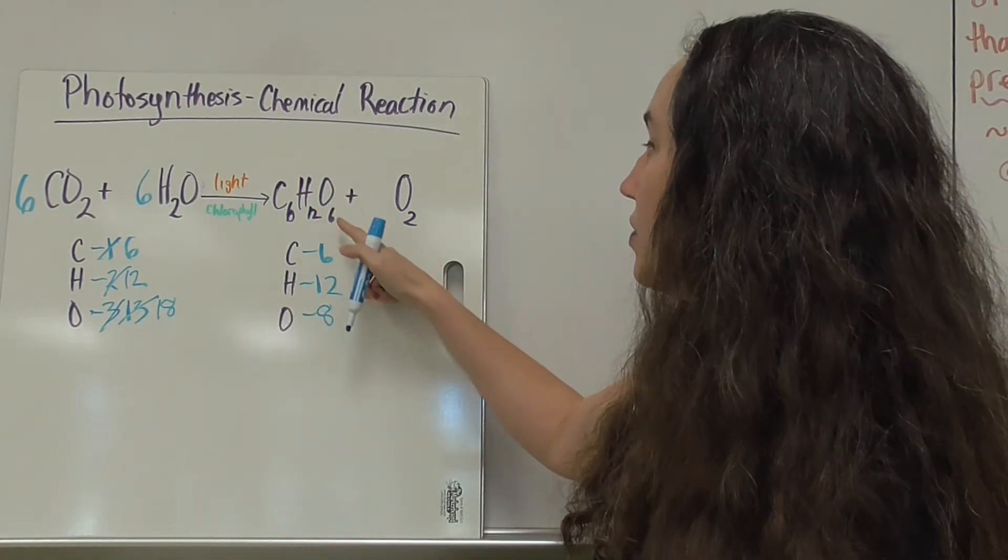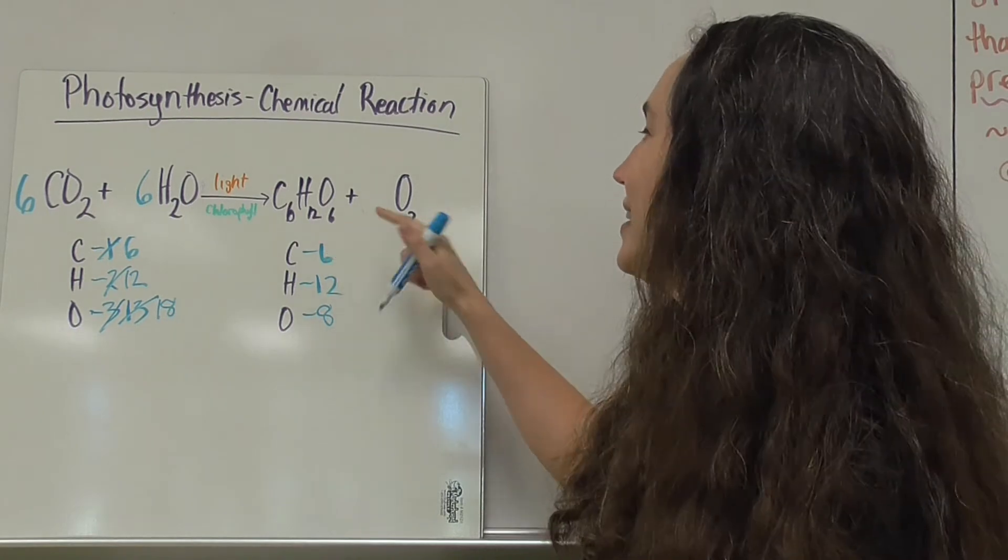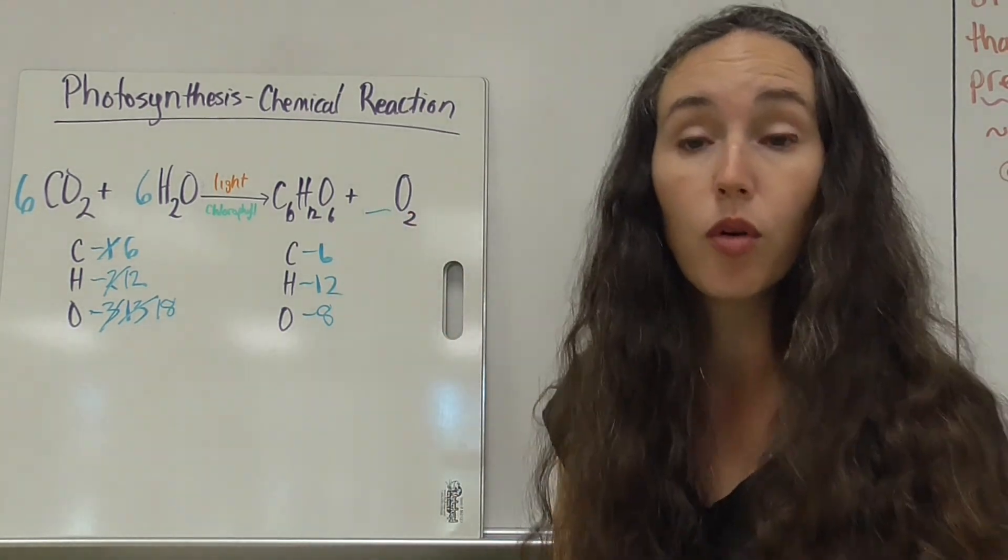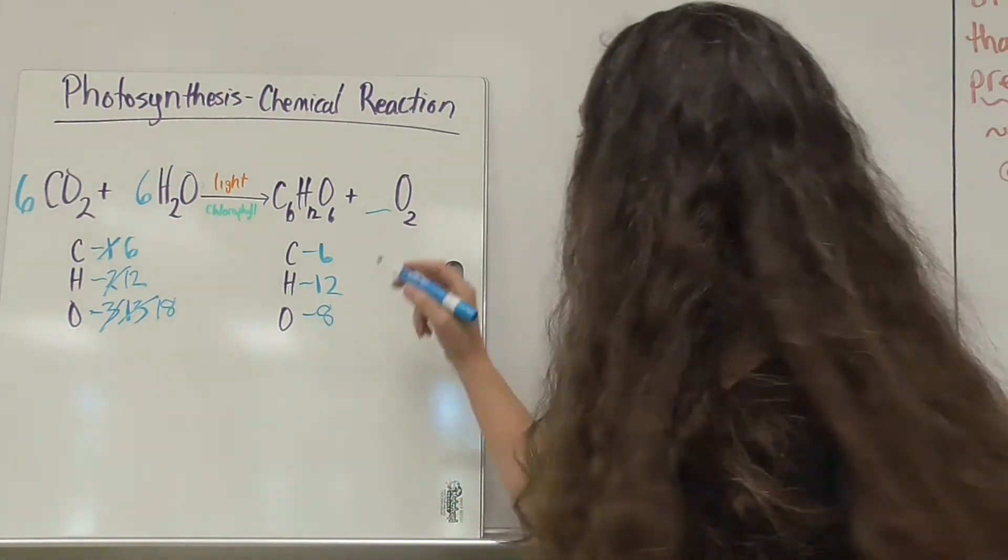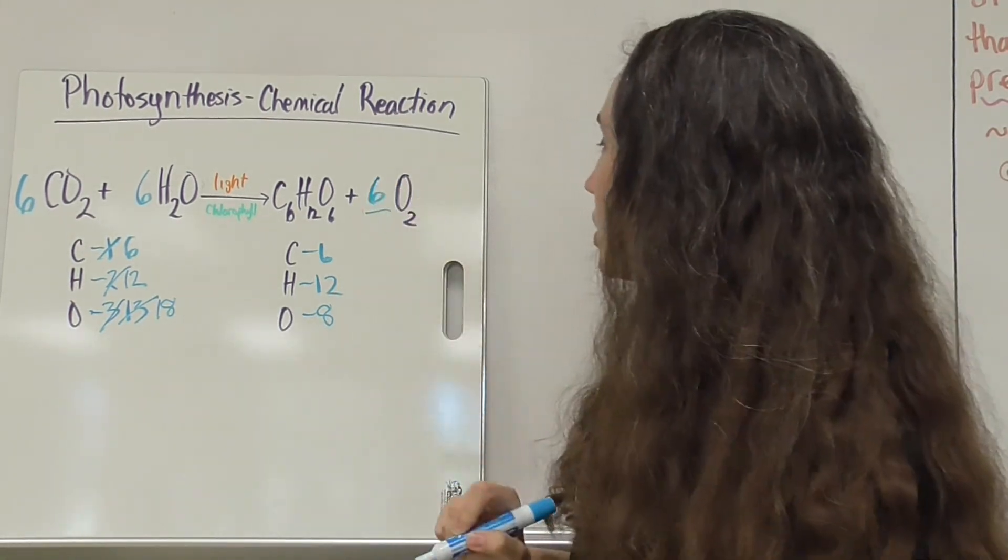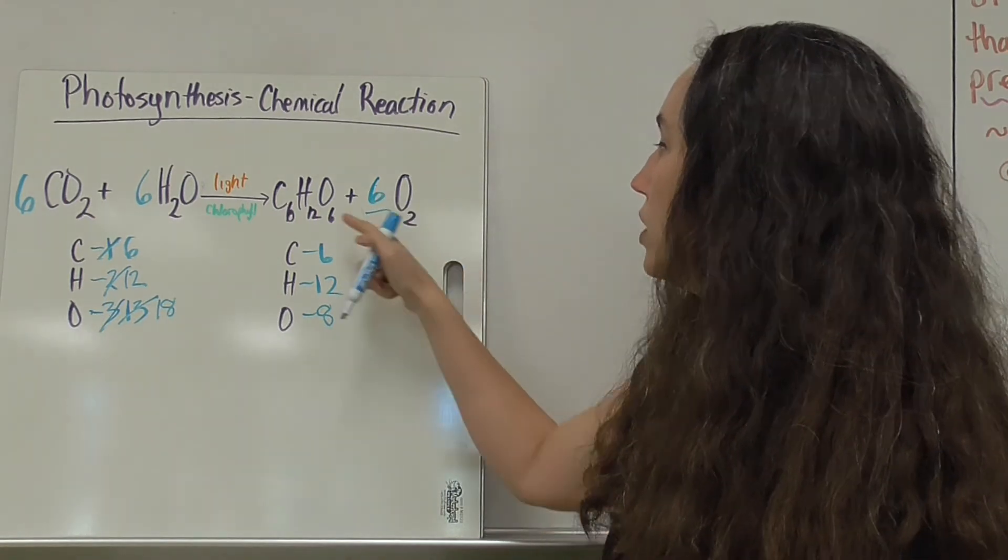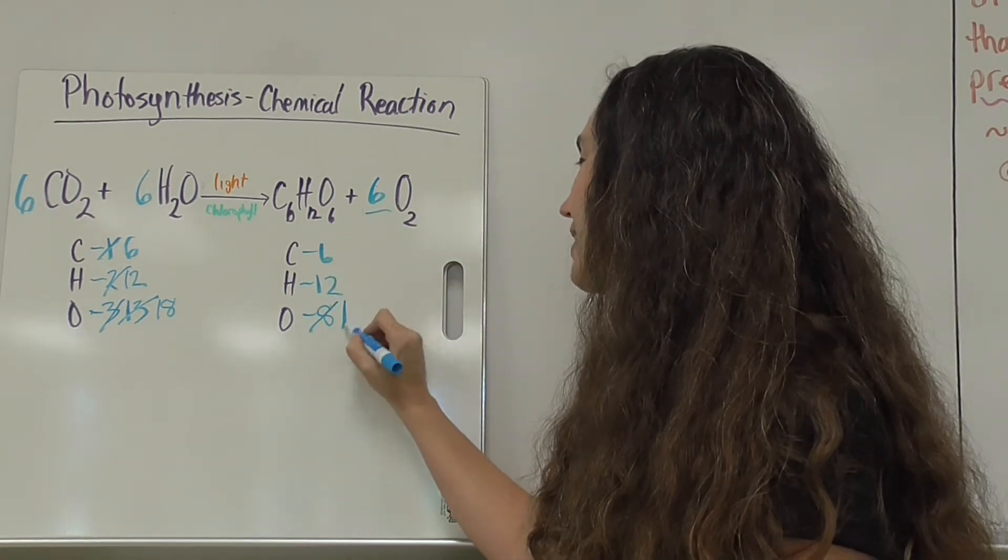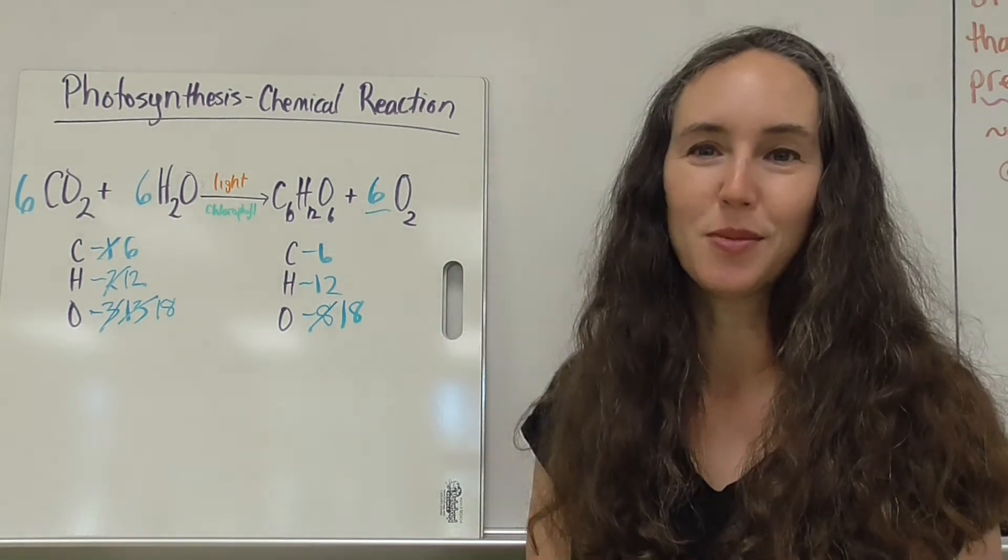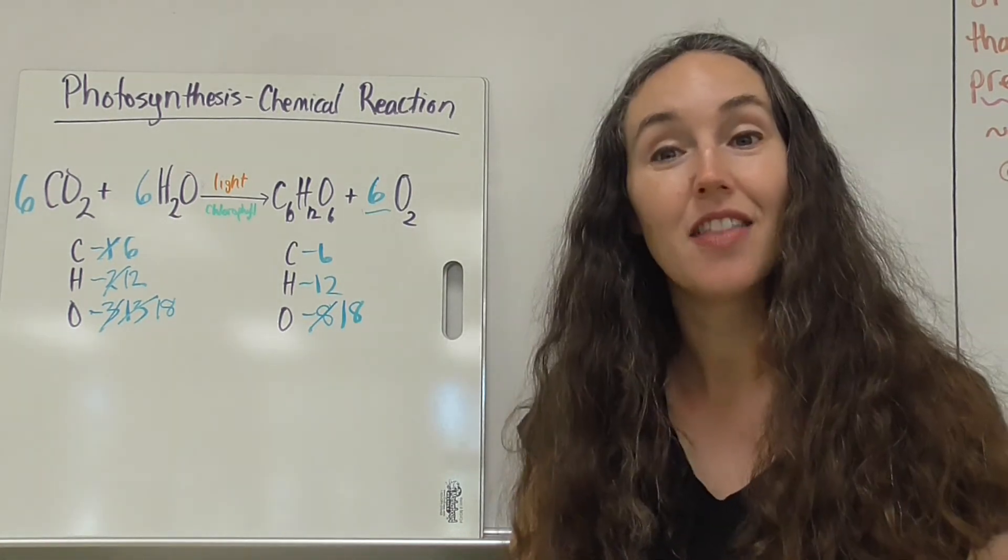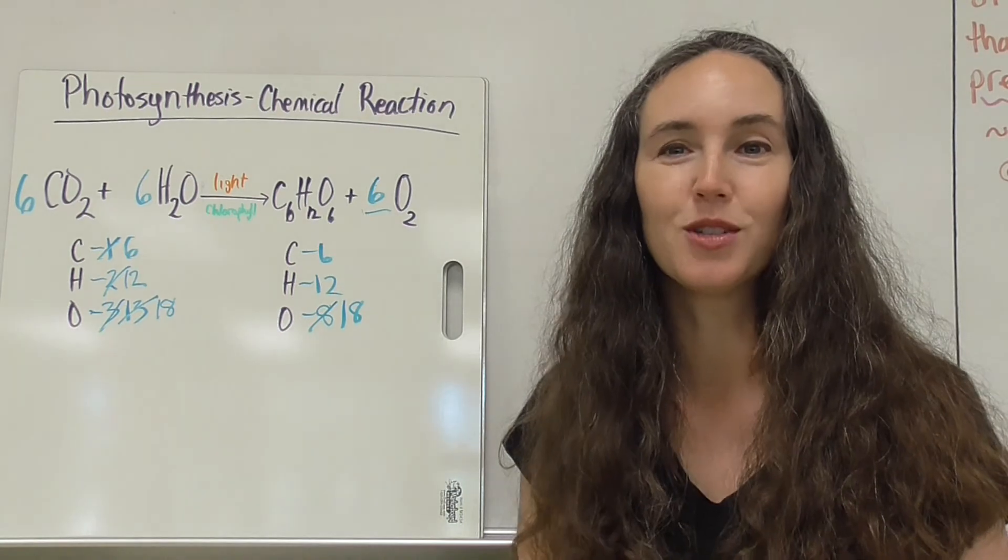So what can I do to make 18 and eight balance? Well, six of them are here, so I need to do something here to make that 12. So I've already got two, six times two is 12. So if I put six as the coefficient, that's going to be 12 plus these six, that's 18. And now our chemical equation is balanced. And that's the very basics and fundamentals of photosynthesis.